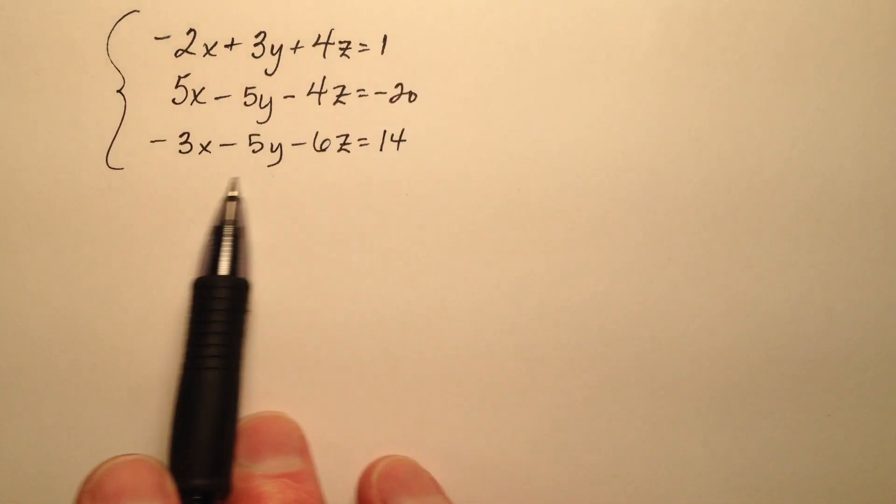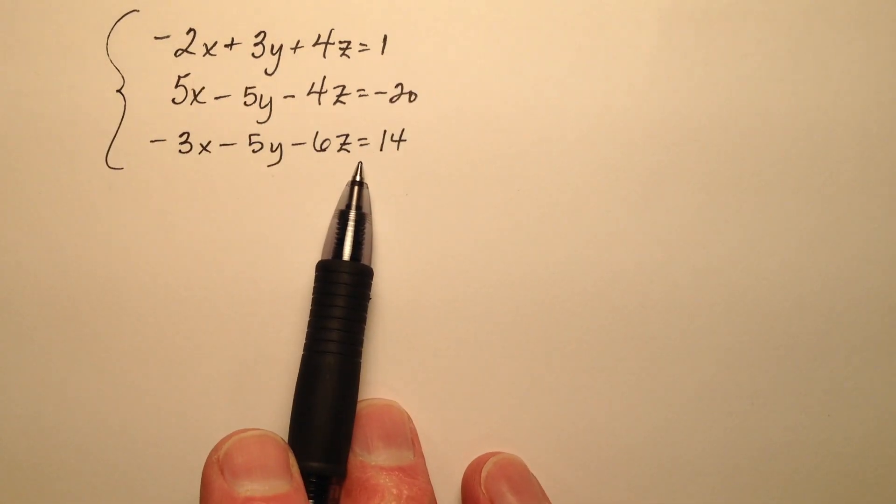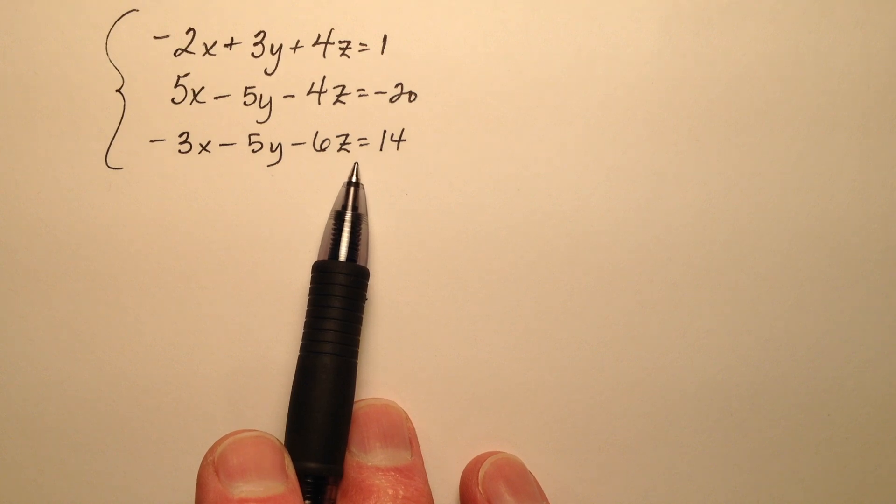In this example, we're going to solve this system of three equations and three unknown values, and we're going to do so by using a first step of elimination.